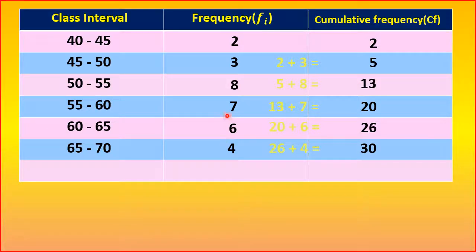26 plus 4 is equal to 30. Add all the frequencies. That is total n is equal to 30.